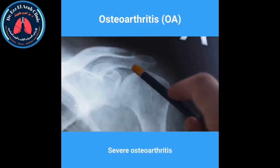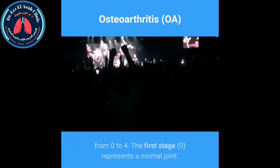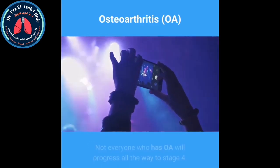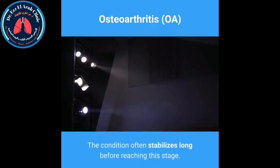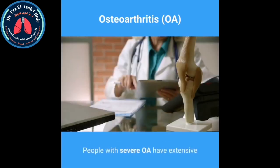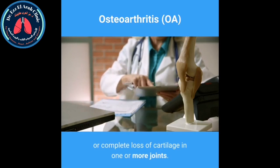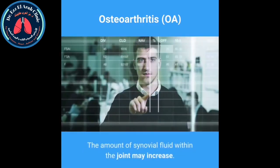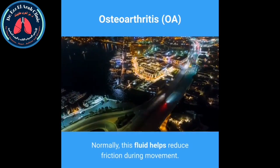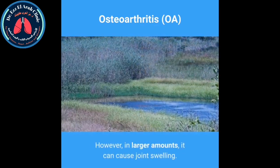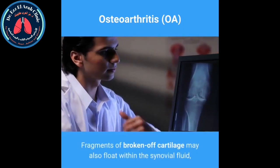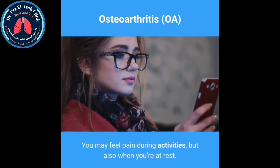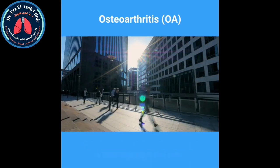Severe osteoarthritis. OA is a progressive condition with five stages from zero to four. Stage zero represents a normal joint; stage four represents severe OA. Not everyone progresses all the way to stage four — the condition often stabilizes long before reaching this stage. People with severe OA have extensive or complete loss of cartilage in one or more joints. Bone-on-bone friction can cause severe symptoms such as increased swelling and inflammation. The amount of synovial fluid within the joint may increase, and fragments of broken-off cartilage may float within it, increasing pain and swelling.